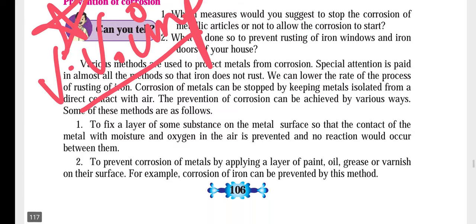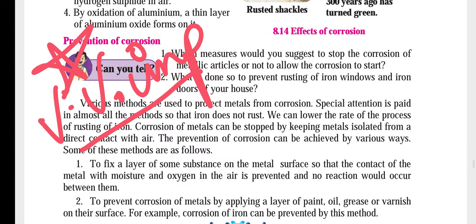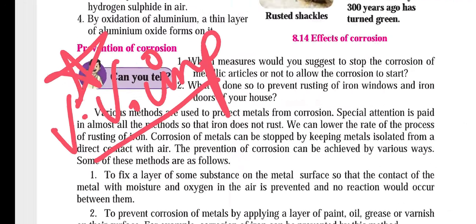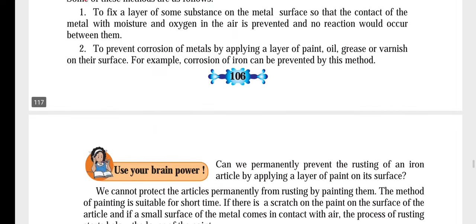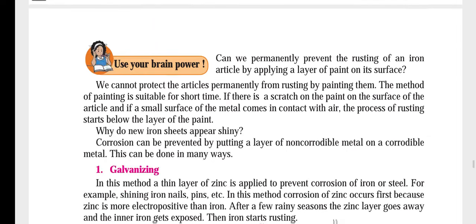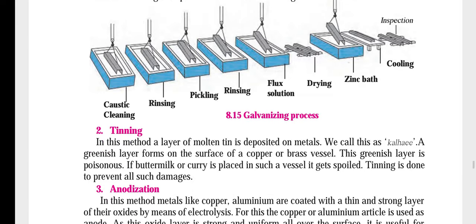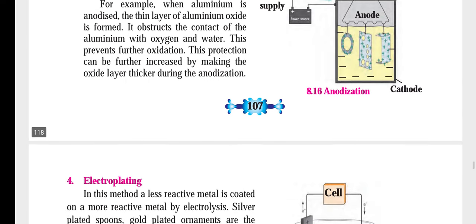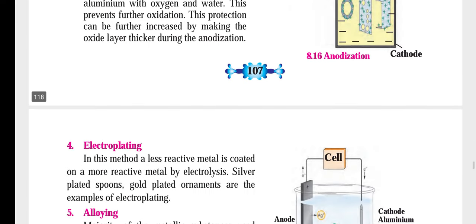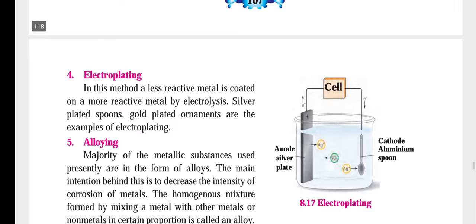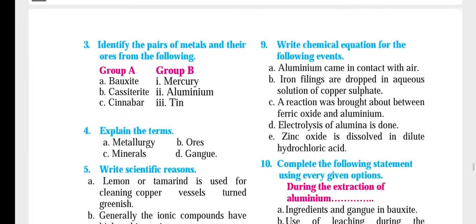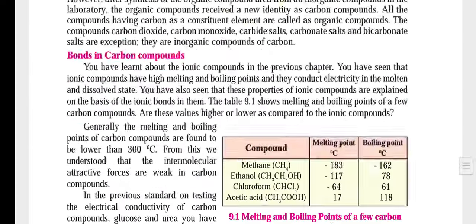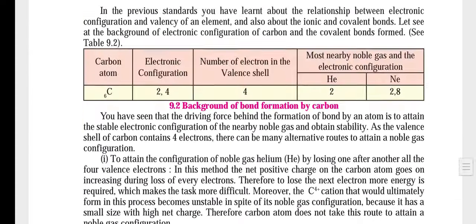Functions of corrosion and prevention of corrosion — prevention of corrosion is very very important because questions come in objective form: what is galvanizing, what is anodizing, what is tinning, what is electroplating, and all that. I don't want you to lose even a single mark on this.